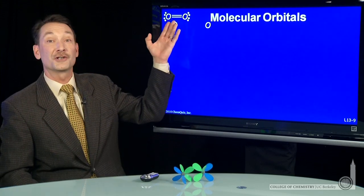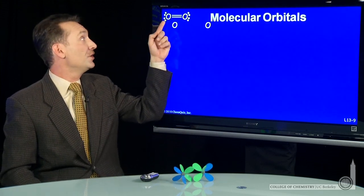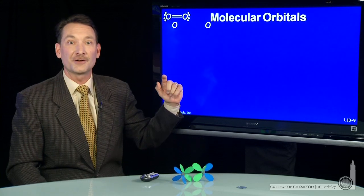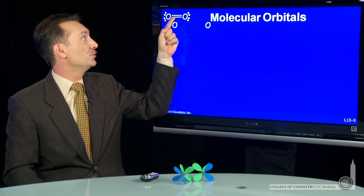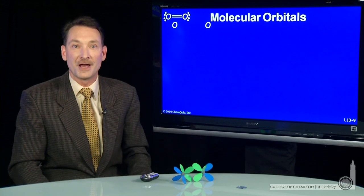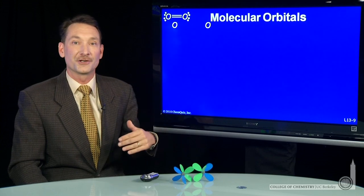And we can draw the Lewis dot structure like this. Two oxygens, 2, 4, 6, 8, 10, 12 electrons. Each oxygen obeys the octet. It has 2, 4, 6, 8 electrons around it. So that's our good Lewis electron dot structure.